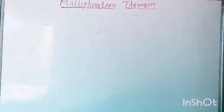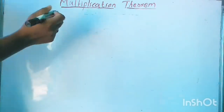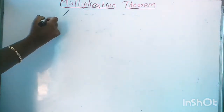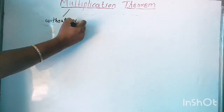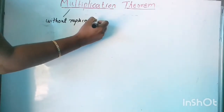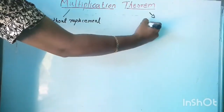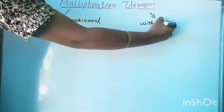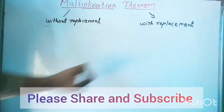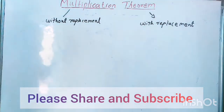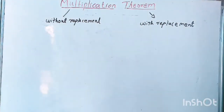Hi dear children, today we are going to discuss the second section of the chapter probability, that is multiplication theory. In multiplication theory we have two cases: one is without replacement and the second one is with replacement.